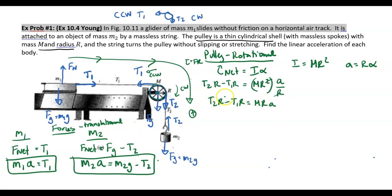We got an R in every single term. So those are going to cancel out. So we essentially have T2 minus T1 equals MA. So that is essentially our rotational motion equation for the pulley.